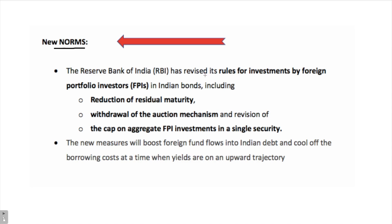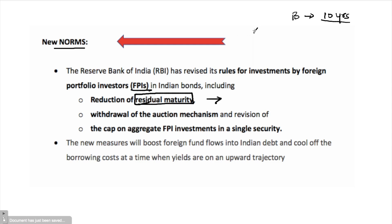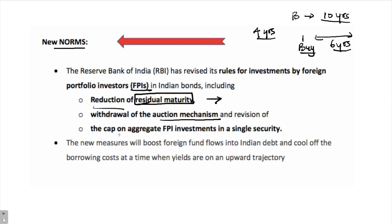What are the new norms for FPI? The new FPI and ECB norms are connected. Three key changes: first, the residual maturity has been reduced. Residual maturity is the remaining maturity on a bond — for example, a 10-year bond issued 4 years ago has a residual maturity of 6 years. Second, the auction mechanism has been withdrawn. Third, the cap on aggregate FPI investments in a single security has been revised.